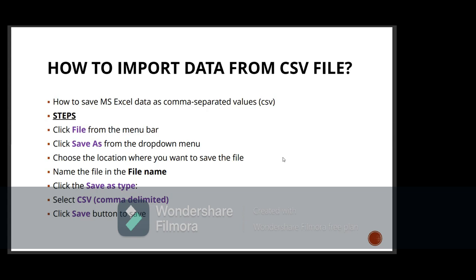Name the file — you can use the same name as the Excel file or a different name. Then click the Save As Type dropdown menu. Carefully go through the list and select CSV Comma Delimited. Once you select CSV Comma Delimited, click the Save button. You have successfully saved your file as CSV. When you open it, you can view it in Excel in the form of a table, which is one of the best ways to view a CSV file.